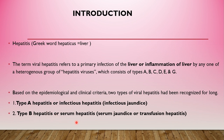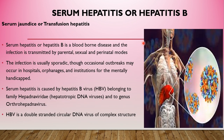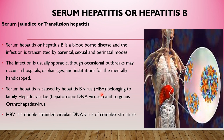The type B hepatitis virus is also called serum hepatitis, serum jaundice, or transfusion hepatitis. Serum hepatitis or hepatitis B is a bloodborne disease. The infection is mainly transmitted by parenteral, sexual, and perinatal modes, whereas type A is transmitted by food and waterborne routes. The infection is usually sporadic, though occasionally outbreaks may occur in hospitals, orphanages, and institutions for the mentally handicapped. Serum hepatitis is caused by hepatitis B virus, denoted as HBV.